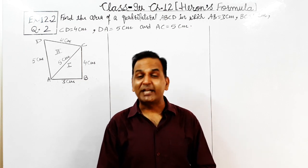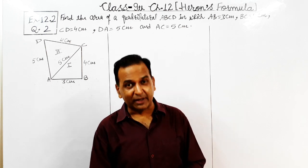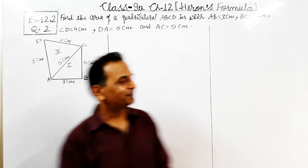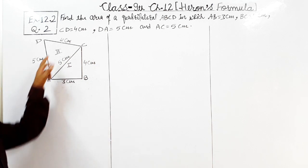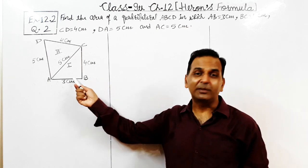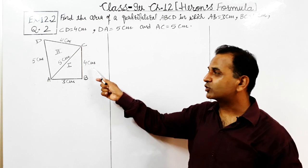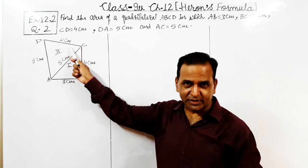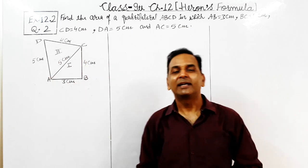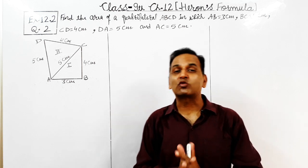Now let's understand today's question. First of all, let's understand what is given and what we have to find out. According to the statement: find the area of a quadrilateral ABCD in which AB equals 3 cm, BC equals 4 cm, CD equals 4 cm, AD equals 5 cm, and diagonal AC equals 5 cm. We have to find out the area of this quadrilateral ABCD.